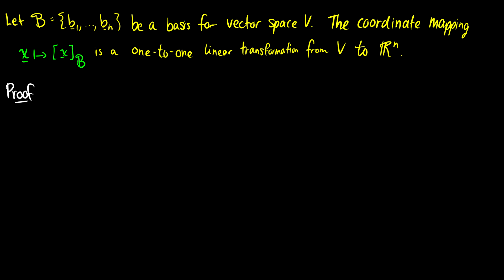In this video, we're going to talk more about changing coordinates and view the coordinate mapping as a transformation. We'll also look at how polynomials interact with the real space. So first, let's let B be a basis for vector space V. We say that the coordinate mapping from X to X relative to V is a one-to-one linear transformation from V to R. In the first part, we'll cover the linear transformation part, and then later we'll do one-to-one.